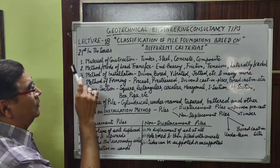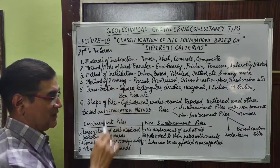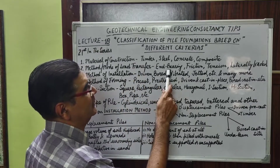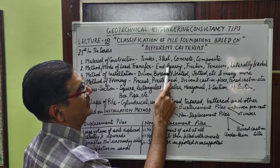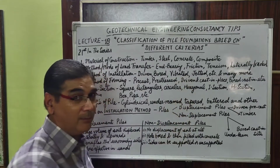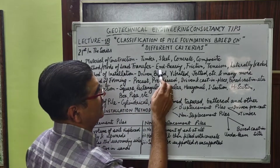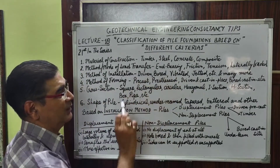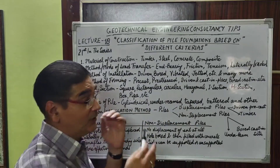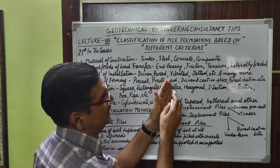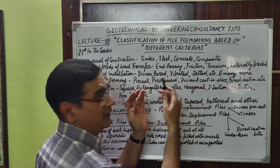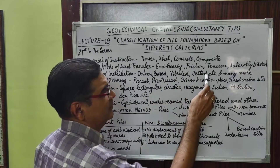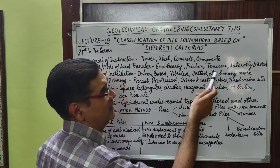Based on the method and mode of load transfer, we know that any pile has a certain component of load bearing capacity coming from end bearing and some part from friction. It may be the case that in a particular pile it is predominantly end bearing. Alternatively, the pile load may be totally governed by the surrounding soil friction, in which case it is termed a friction pile.